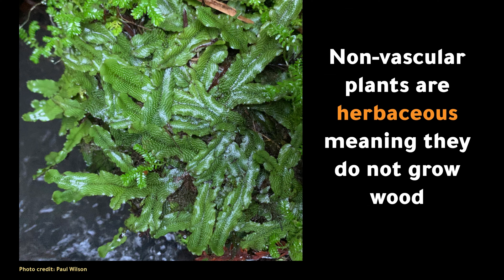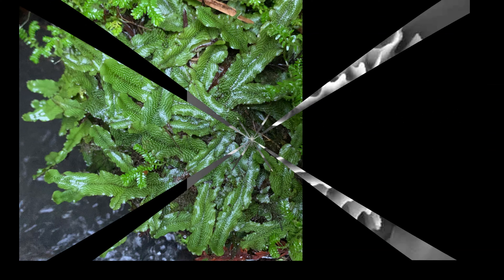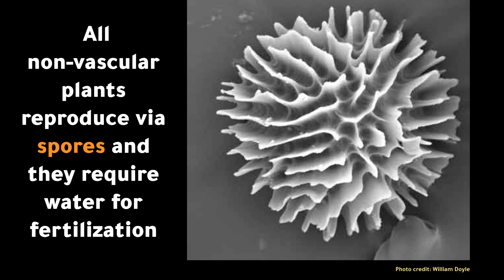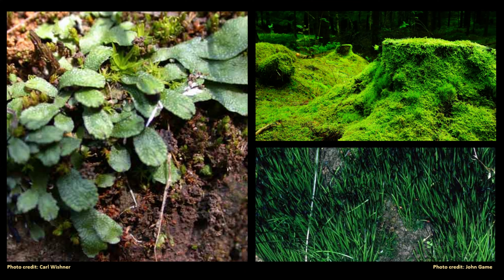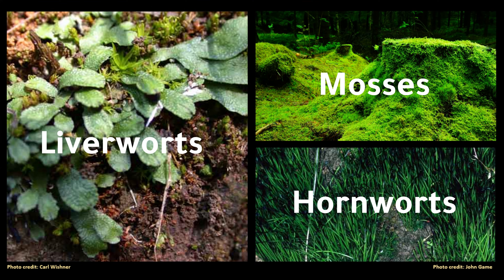Non-vascular plants are herbaceous, meaning they do not grow wood, and they do not produce seeds, fruit, or flowers. All non-vascular plants reproduce via spores, and they require water for fertilization. There are only three types of non-vascular plants, and they include the liverworts, mosses, and hornworts.